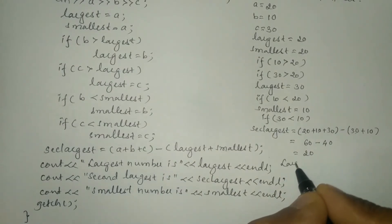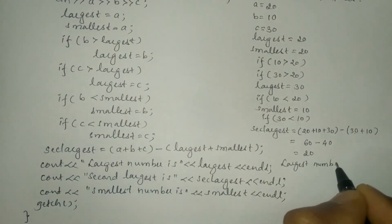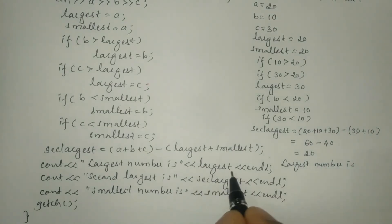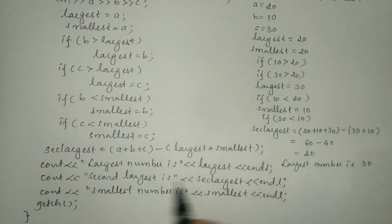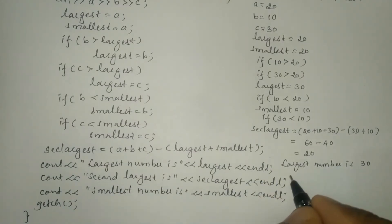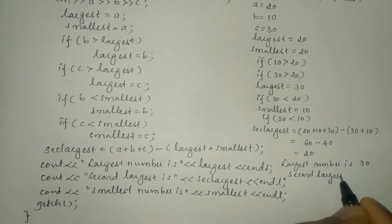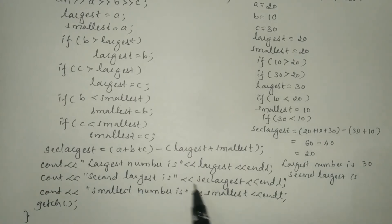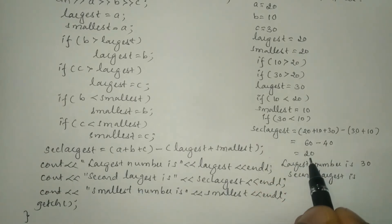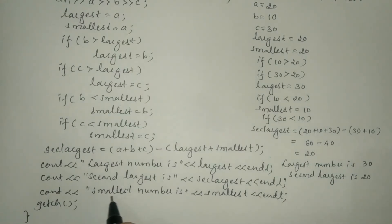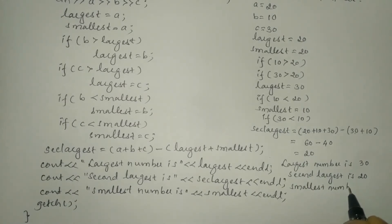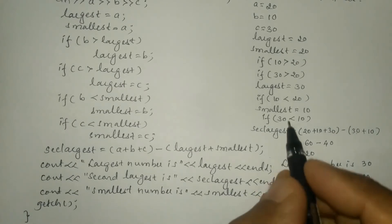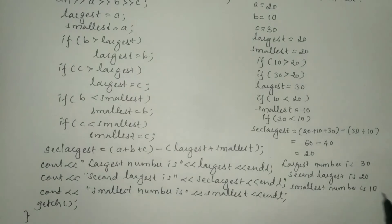The program prints: "Largest number is" — the variable largest holds 30, so it prints 30. The cursor moves to the next line and it prints "Second largest is" — the variable sec_largest holds 20, so it prints 20. Finally it prints "Smallest number is" — the variable smallest holds 10, so it prints 10.